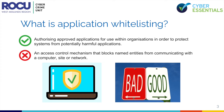What is application whitelisting? Application whitelisting is authorizing approved applications for use within organizations in order to protect systems from potentially harmful applications. In contrast, application blacklisting is an access control mechanism that blocks named entities from communicating with a computer, site, or network. The goal of application whitelisting is to have complete control over what programs can run on a system — all other software is regarded as unauthorized and will not run.